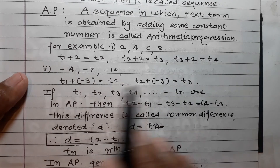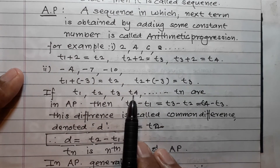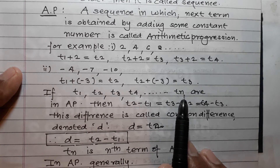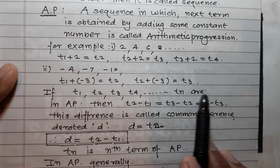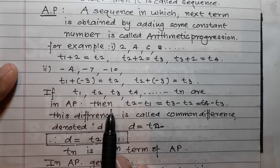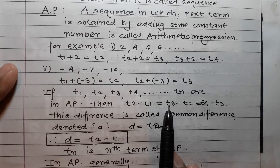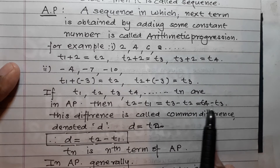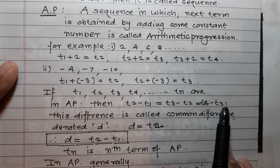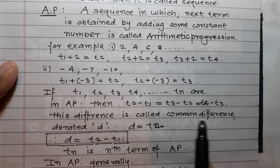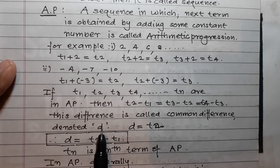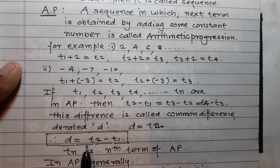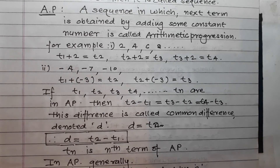If t1, t2, t3, t4, ..., tn are in AP, then t2 - t1 = t3 - t2 = t4 - t3. This difference between two consecutive terms is called the common difference, denoted by d. So d = t2 - t1.